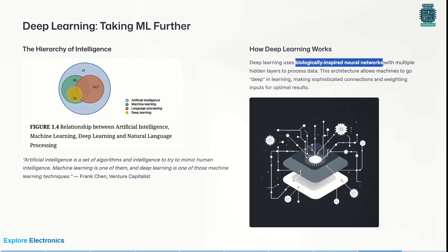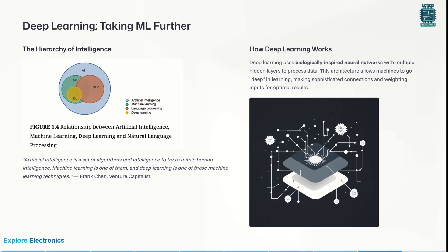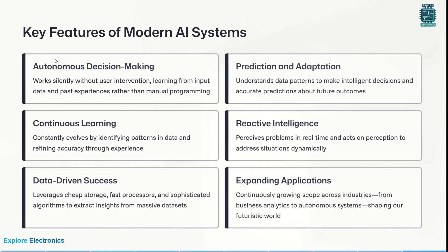How does deep learning work? Deep learning uses biologically inspired neural networks — similar to how the human brain thinks with neurons — with multiple hidden layers to process data. As the name suggests, just as neurons think deeply in a human brain, deep learning has different layers of processing. This architecture allows machines to go deep in their learning, making sophisticated connections and giving optimal results. It is a step ahead compared to machine learning.